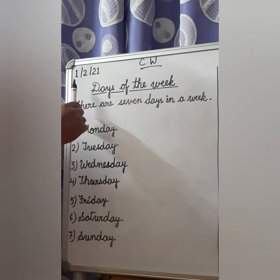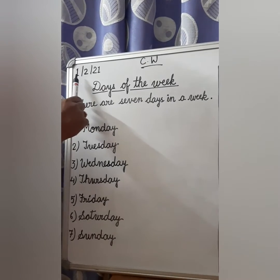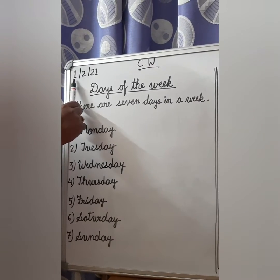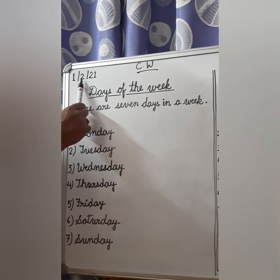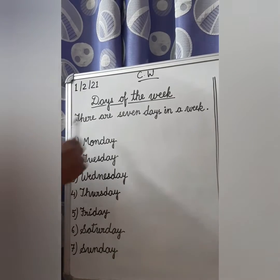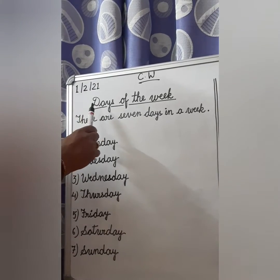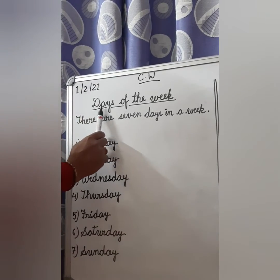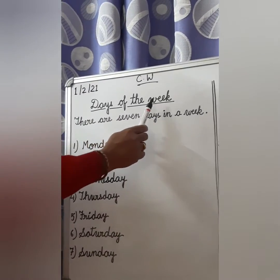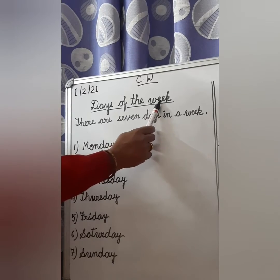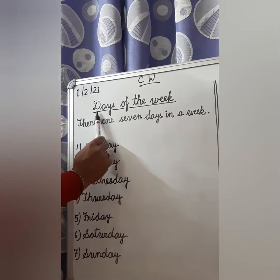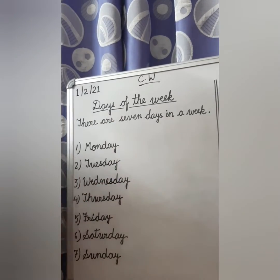So children, first of all, write down today's date — that is 1 oblique 2 oblique 21. Then write the heading D-A-Y-S, days of the W-E-E-K, week. Days of the week.